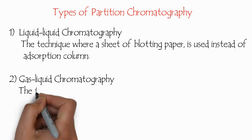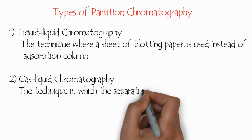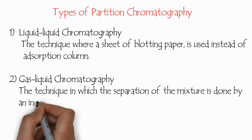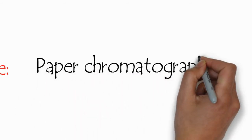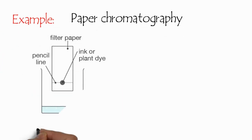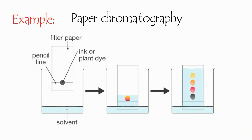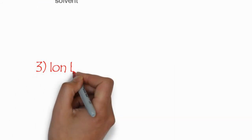Types of partition chromatography: The first one is liquid-liquid chromatography, where a sheet of blotting paper is used instead of an adsorption column. The second type is gas-liquid chromatography, where separation of the mixture is done using an inert gas along a tube. An example of partition chromatography is paper chromatography. A filter paper is used — you draw a line, put an ink or plant dye, and when you place it in a solvent tank, the different colors are separated over time. This is quite common for amino acid separation.